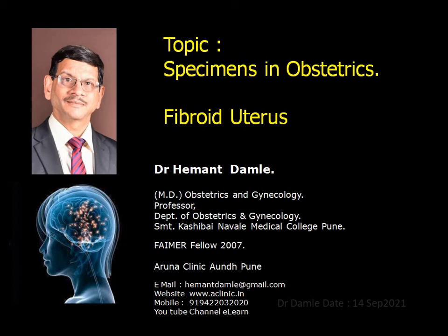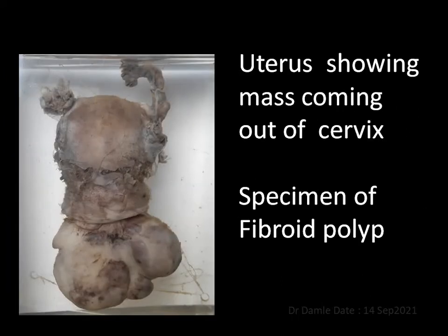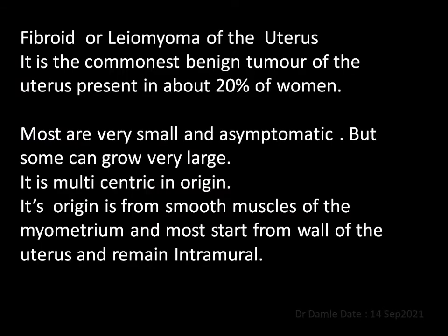Specimens in obstetrics: Fibroid Uterus. This is the specimen showing uterus cut open to show a mass in the cavity. Most likely diagnosis is fibroid polyp. This is another specimen of uterus showing mass coming out of the cervix — a specimen of fibroid polyp.